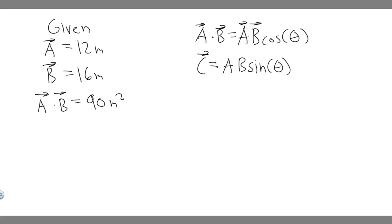In this problem, we're told vector A has a magnitude of 12 meters and vector B has a magnitude of 16 meters. The scalar product A times B is 90 meters squared. What is the magnitude of the vector product between these two vectors?